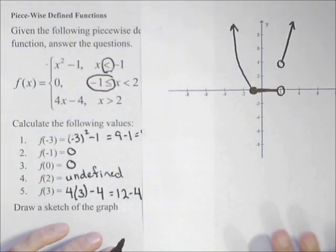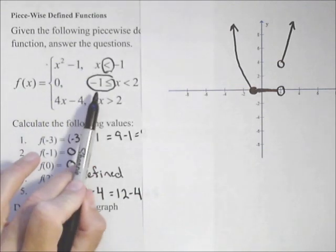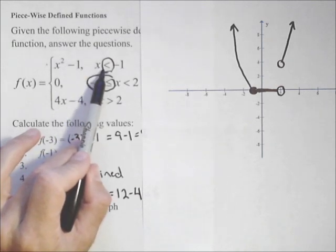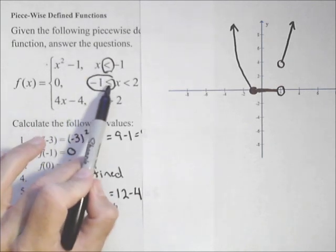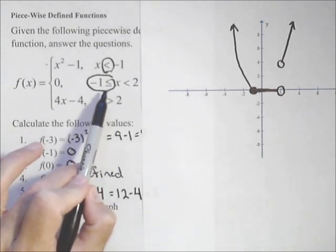And that's a rough sketch of our graph and how we can graph a piecewise defined function. What we do is we look at each piece. Always do the endpoint first. If it's a strict inequality, give it an open circle. If it's less than or equal to or greater than or equal to, you give it a closed circle.